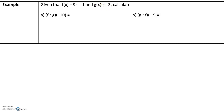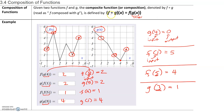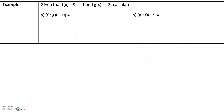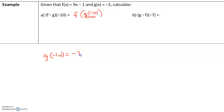We want to calculate in part a: what is f composite g of negative 10? Writing this using proper notation, f composed of g of x equals f of g of x, so f composed of g of negative 10 equals f of g of negative 10. First, let's evaluate the inner function, g of negative 10. Since g of x is a constant function, no matter what the input is, the output will always be negative 3. So g of negative 10 has an output of negative 3.